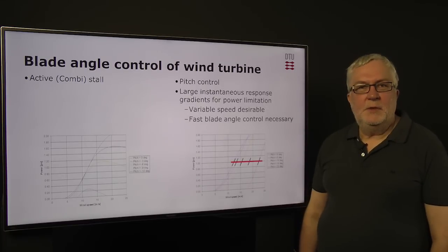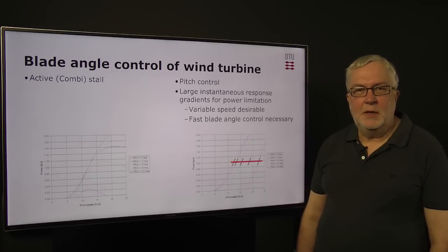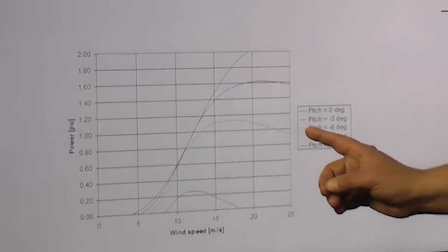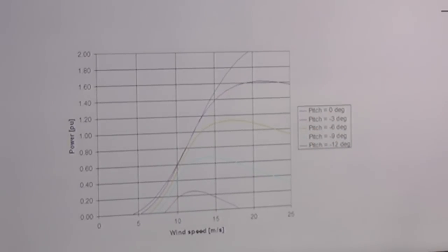If we have fixed speed wind turbines, then active stall control can be used instead. And here we are turning the blade in the negative direction, as you can see from the values of the pitch angle.